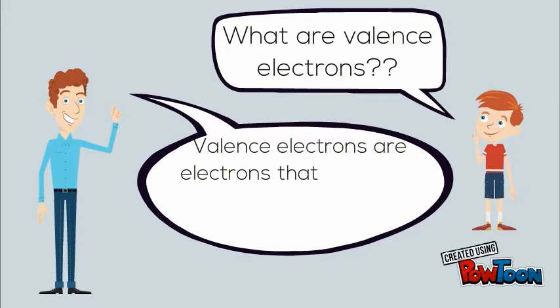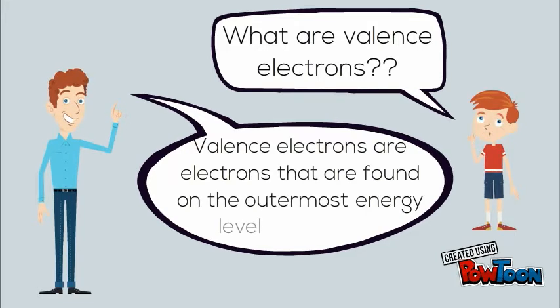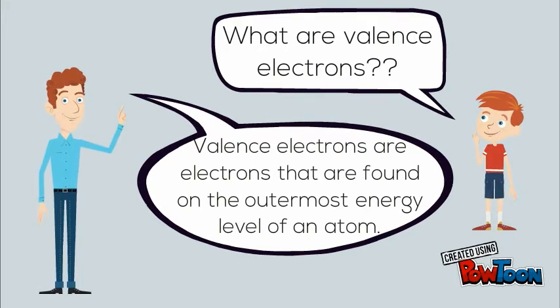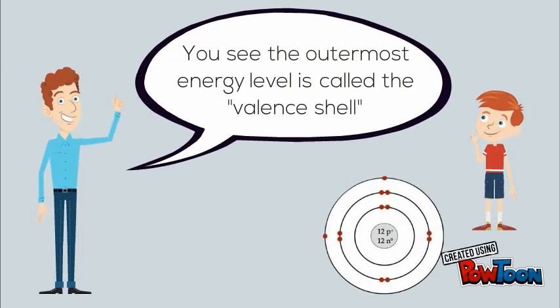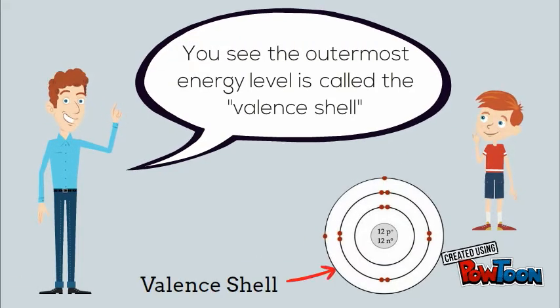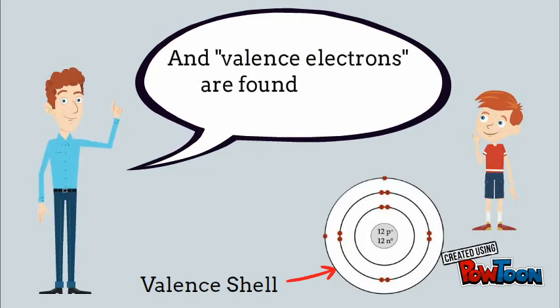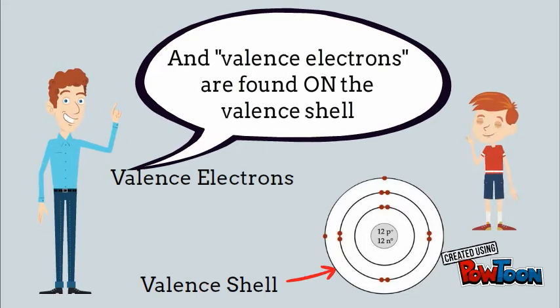Valence electrons are the electrons that are found on the outermost energy level of any atom. That outermost energy level is called the valence shell. Electrons that are found on the valence shell are called valence electrons.